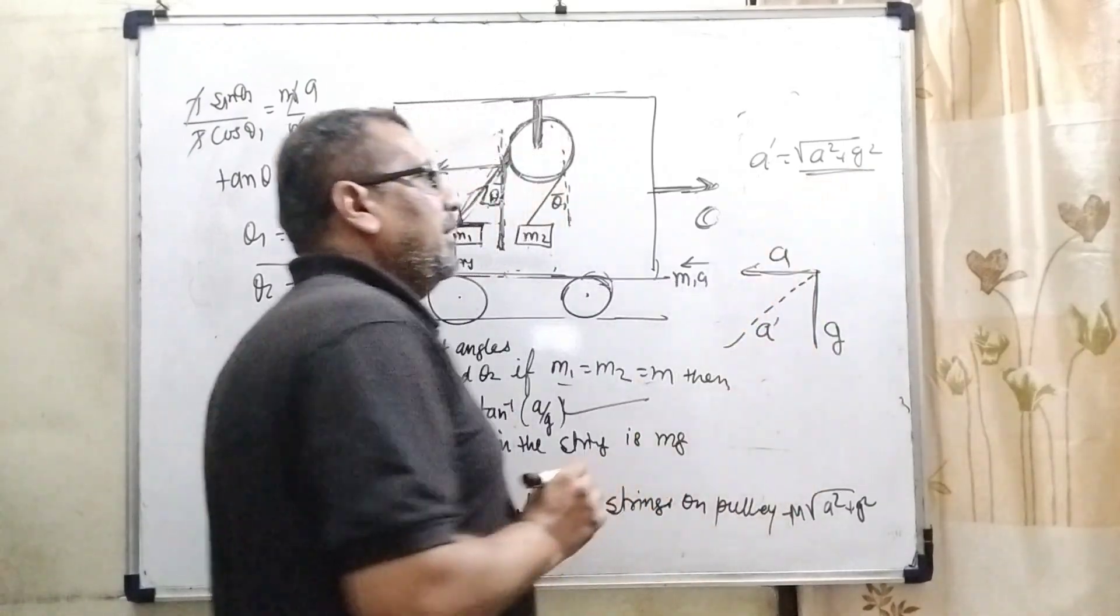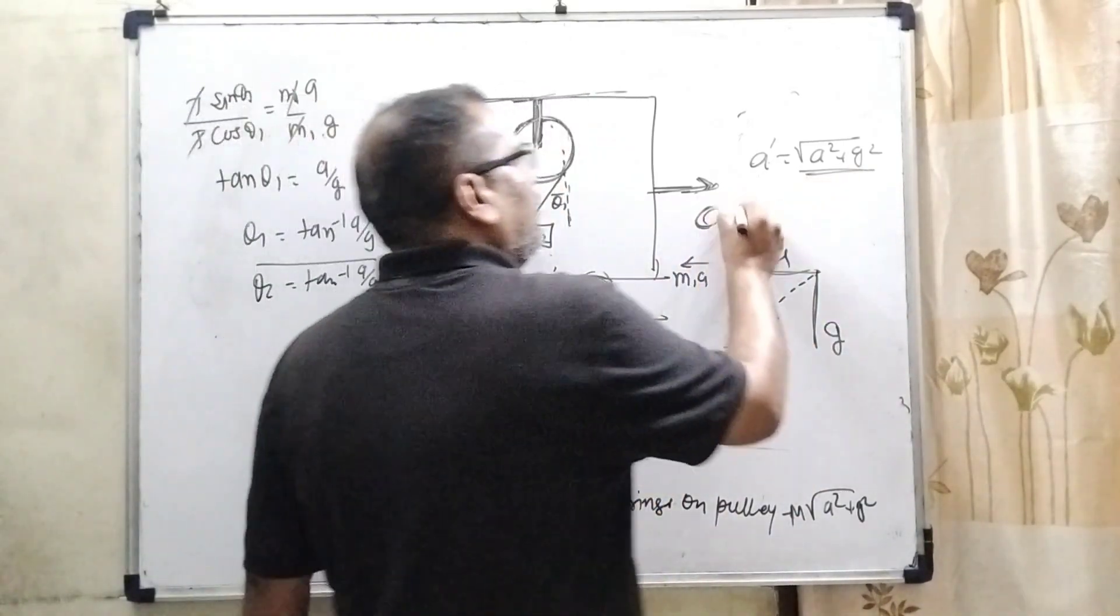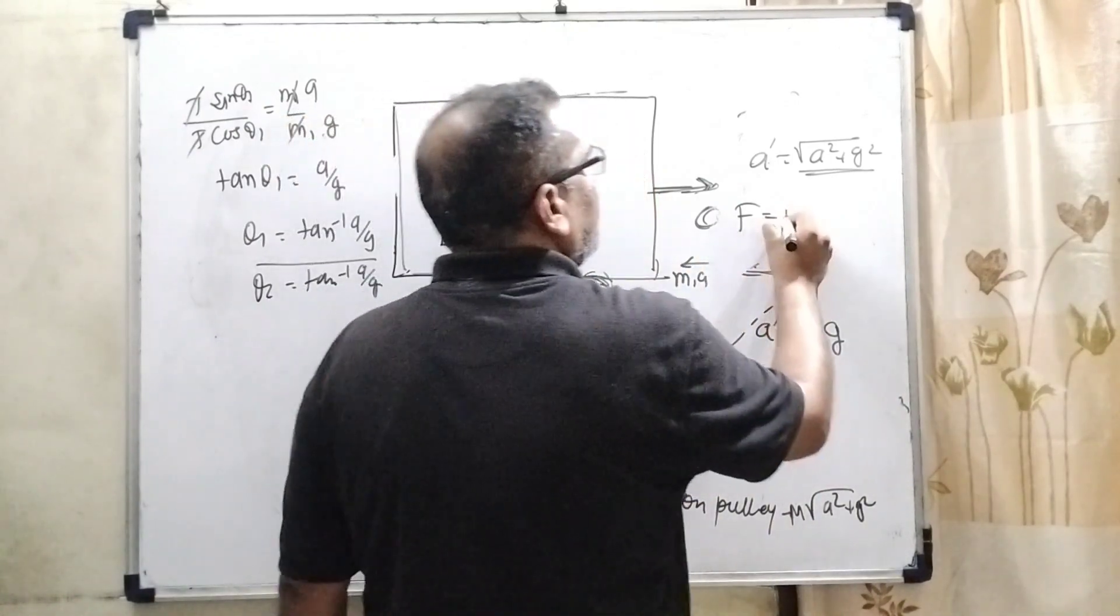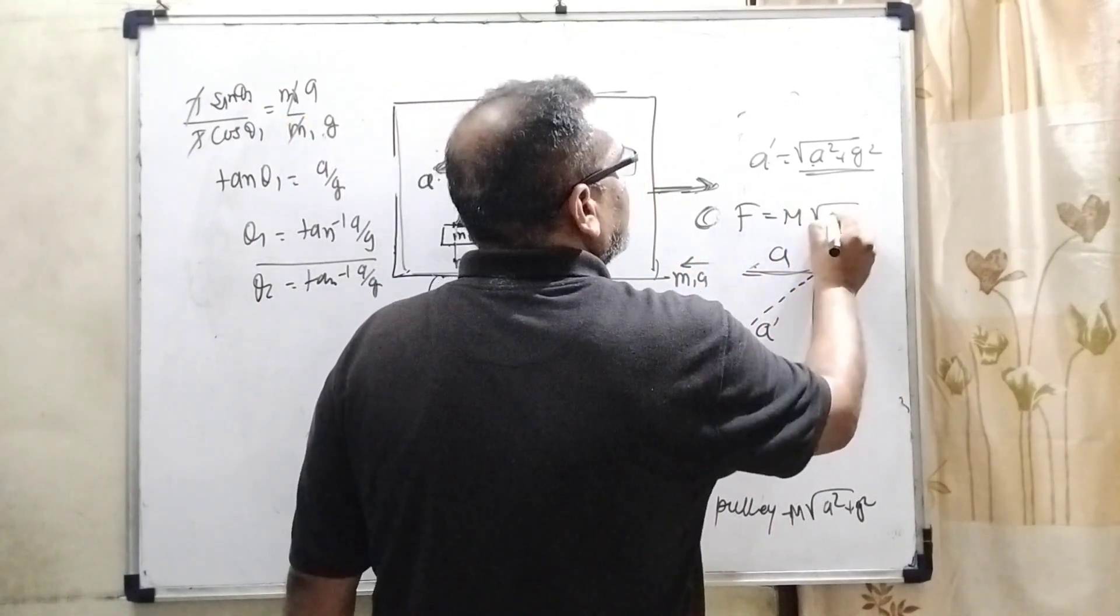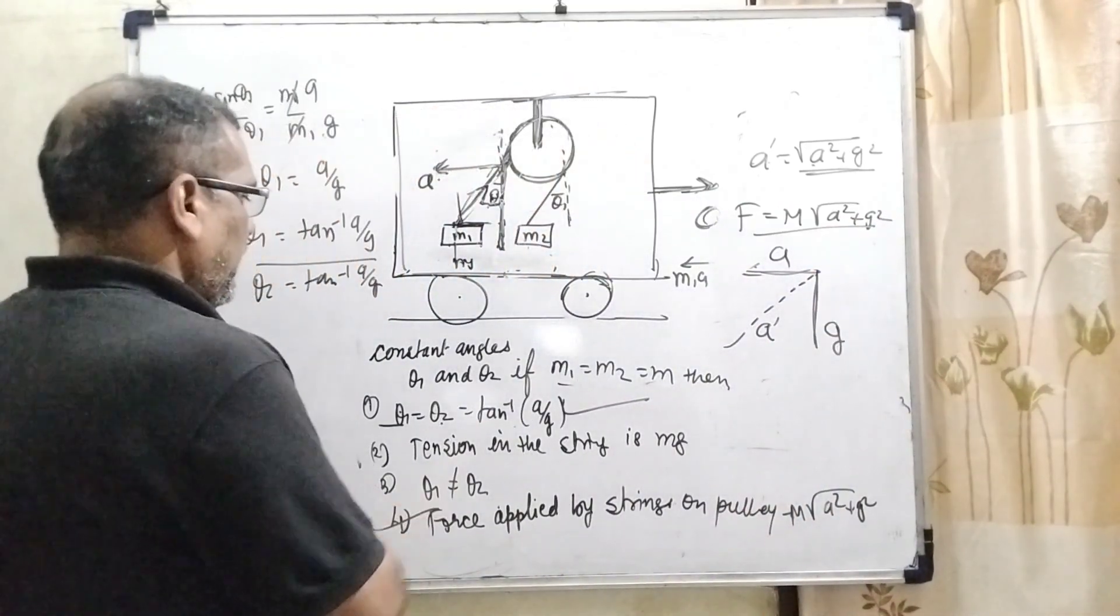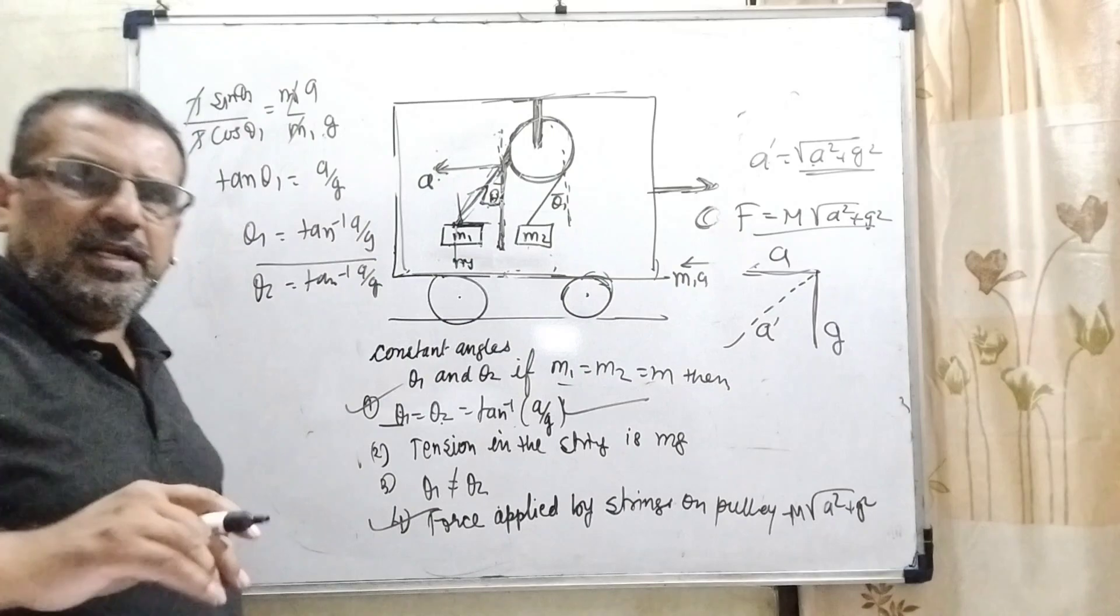So force equals the system mass, capital M, times acceleration root of a square plus g square. So last option 4 and first option 1 are correct. I hope you understood this question.